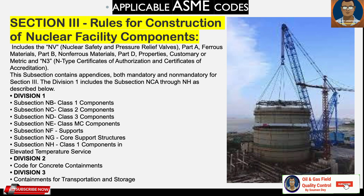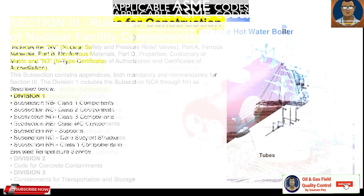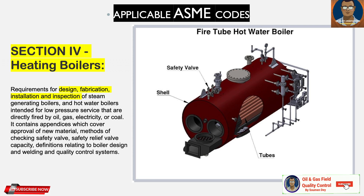ASME Section 4 is for Heating Boilers — requirements for design, fabrication, installation, and inspection of steam generation boilers and hot water boilers intended for low pressure service that are directly fired by oil, gas, electricity, or coal. It contains appendices which cover approval of new material, methods of checking safety valve and safety relief valve capacity, definitions relating to boiler design and welding, and the quality control system.